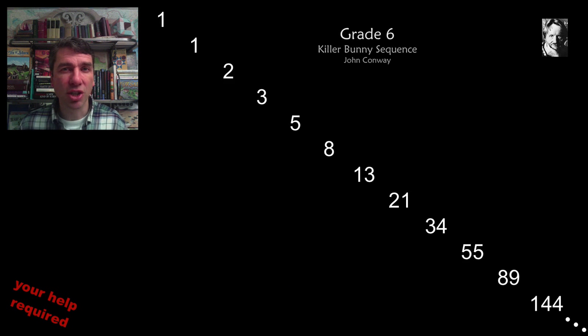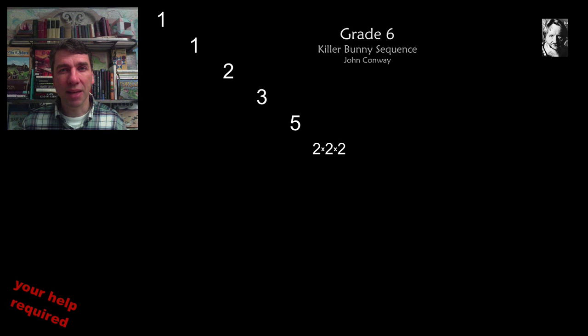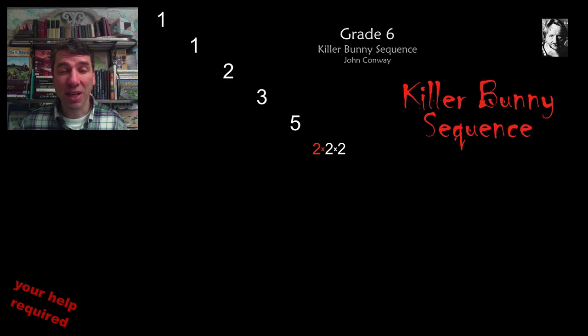The first one is by John Conway. You notice this is the Fibonacci sequence, but what he did is he decided that whenever you come up with a composite number, you should divide it by its smallest prime factor. So the first composite number we hit is 8, and that means instead of being 8, we have to divide that by 2, so we end up with only 4.